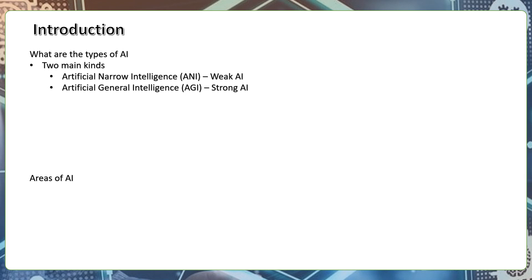AGI and ANI training methods or models relate to General Intelligence. The AGI General Intelligence System represents a broader cognitive capability compared to narrow AI.